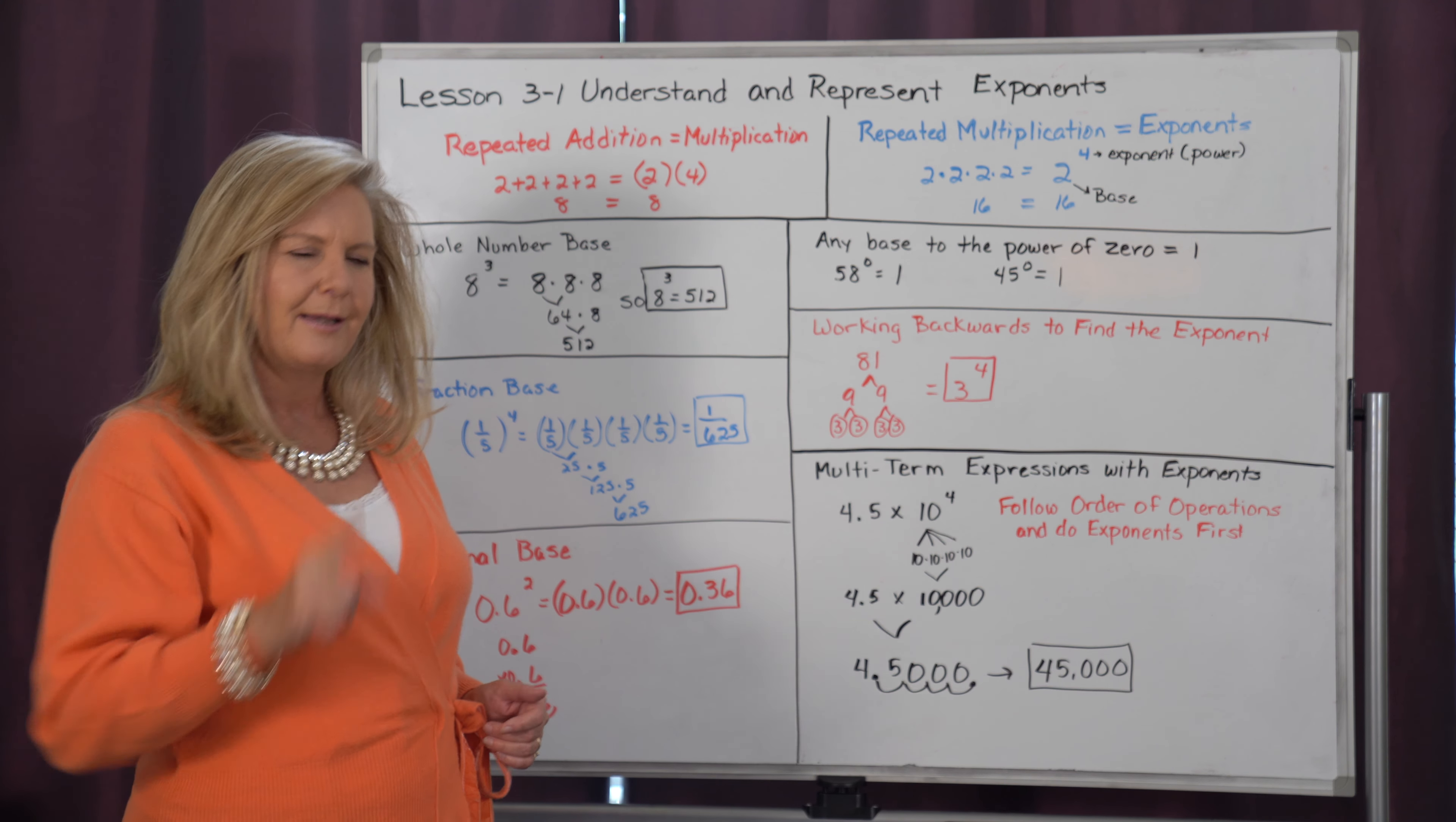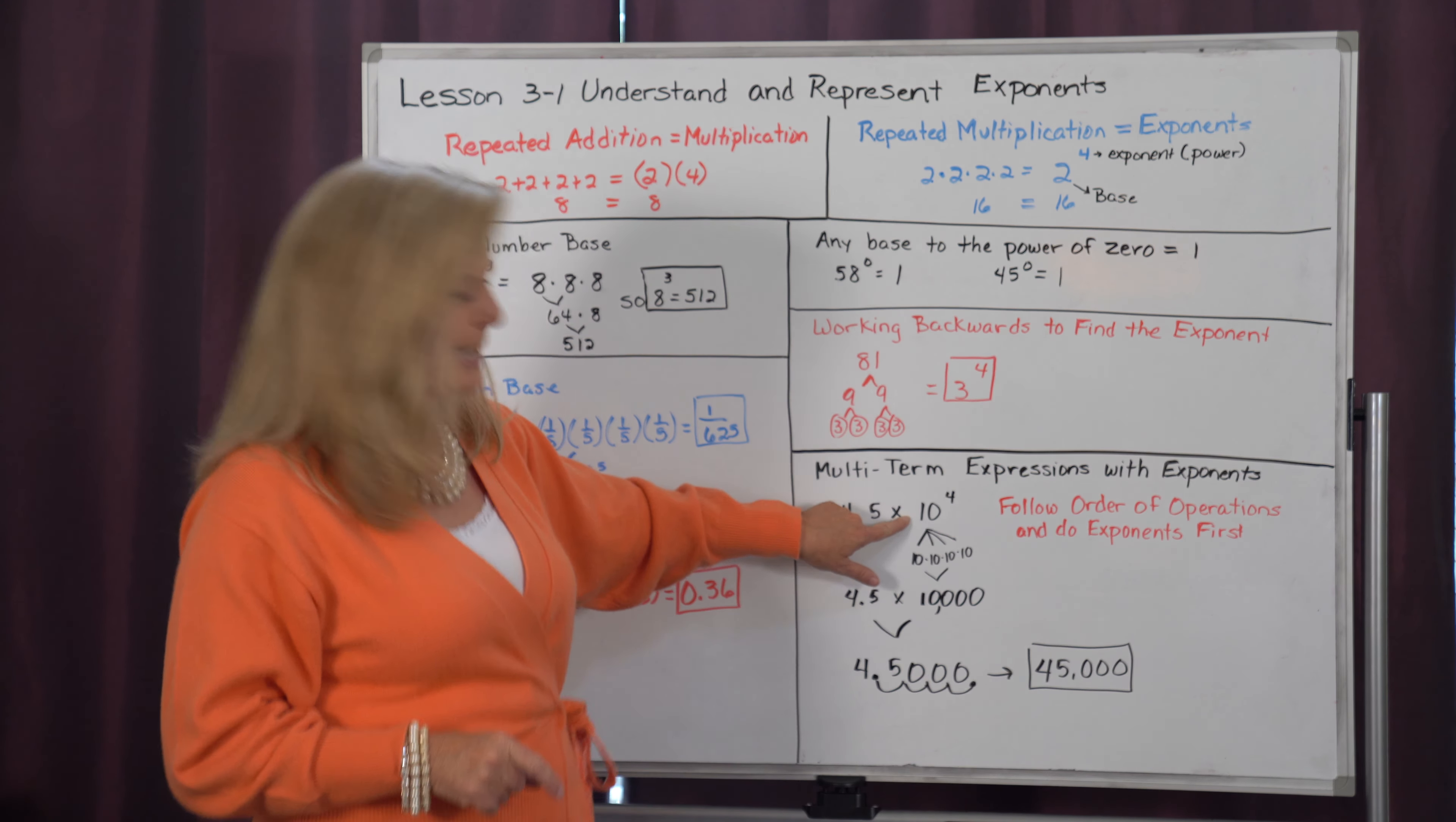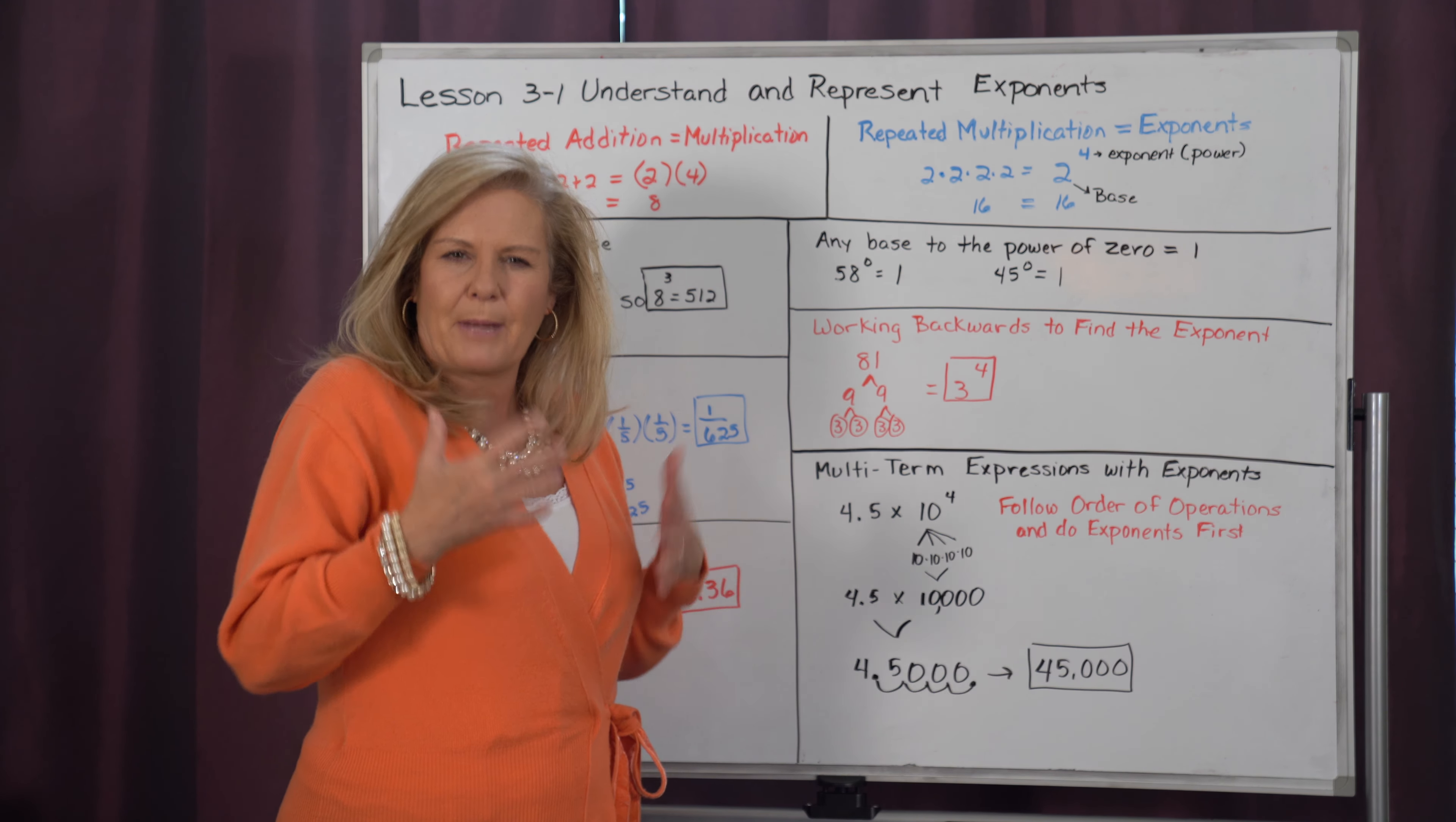Now the hardest thing they're going to do is they're going to combine this concept of exponents with order of operations. So they're going to give you an expression. Say I have 4.5 times 10 to the 4th power. Well, I have multiple operations there. I have multiplication and I have exponents. And we know, according to order of operations, we have to work our exponent first. So I'm going to take 10 to the 4th power, and I'm going to figure out what it is. 10 to the 4th power is repeatedly multiplying 10. So 10 times 10 times 10 times 10, and that equals 10,000. Once I've figured that out and my exponent is gone, now I can multiply it by the 4.5.